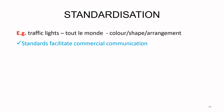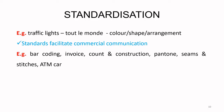Standards help in commercial communication — different businesses in different countries can talk to each other without confusion. Examples include barcoding, invoice content, construction, Pantone for color, seams and stitches (SSA, SSB — standard seam type A or B), and ATM cards. You can use an SBI, PNB or Union Bank of India ATM card anywhere in the world because of standardization.